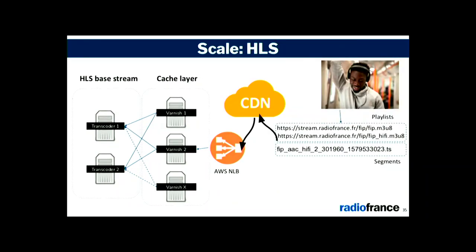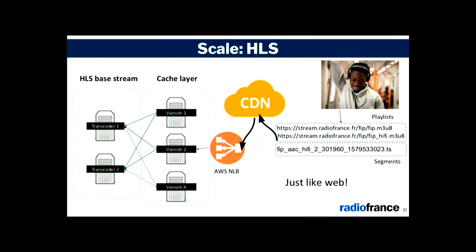Scaling HLS is much simpler. It's almost the same architecture — two transcoders — but this time we can cache static content. The cache layer is actually scalable. You can host the cache layer anywhere you want, like in Kubernetes or in instance groups with auto-scaling. To handle fallback between the two transcoders, you can do this at the CDN level — most CDNs provide this. The main advantage for us is that HLS operates just like a website, not like a stream.